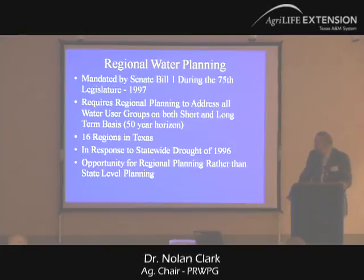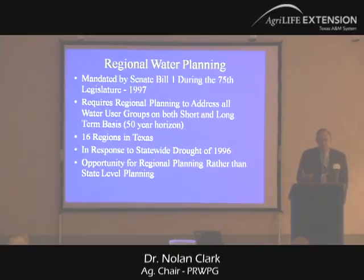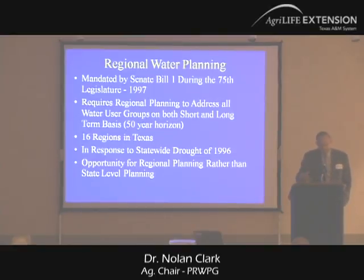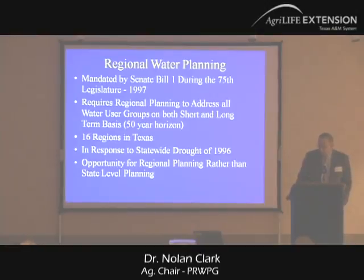Some of the functions of regional water planning is to address the water needs of all water users. They've identified a number of these water user categories: agriculture, livestock, steam generation, manufacturing, industrial, cities, and counties. There are a number of groups represented in the regional water planning process, and all of those have to be included.